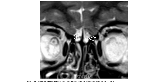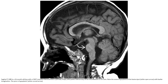T2 MRI in the same patient showed absent left and diminutive right olfactory bulbs. T2 MRI in a 16-month-old boy with CHD7 mutation demonstrated a partially empty sella, and the infundibulum is not seen. Note the severe hypoplasia of the basioccipital with basilar invagination. The pons is hypoplastic.